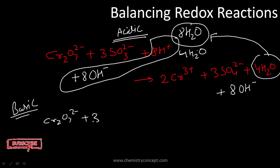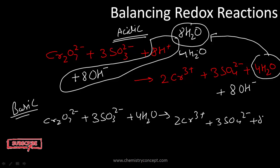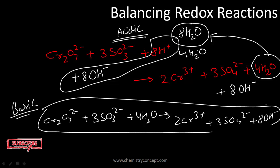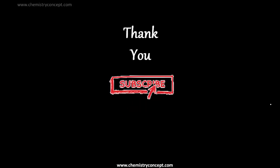The balanced equation in basic (alkaline) medium is: Cr₂O₇²⁻ + 3 SO₃²⁻ + 4 H₂O → 2 Cr³⁺ + 3 SO₄²⁻ + 8 OH⁻. In alkaline medium, OH⁻ ions appear instead of H⁺. The method is: balance in acidic medium first, then add equal OH⁻ ions as there are protons to both sides. I hope things were clear — stay tuned and don't forget to subscribe and leave your feedback.